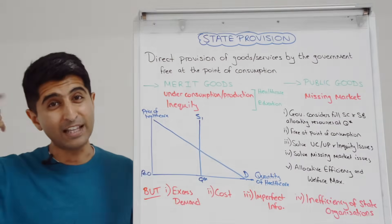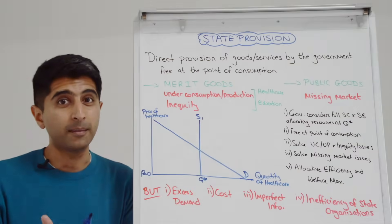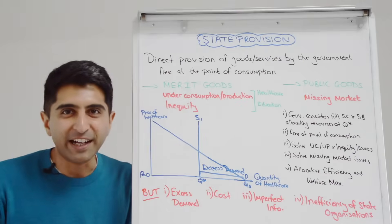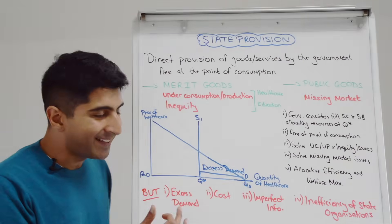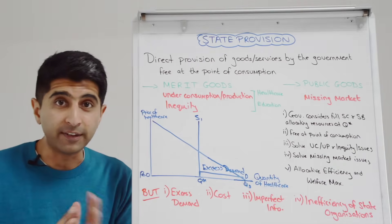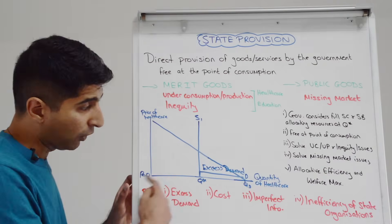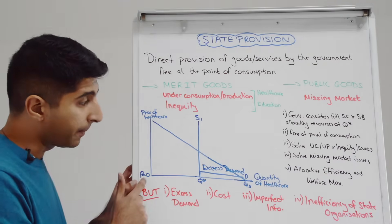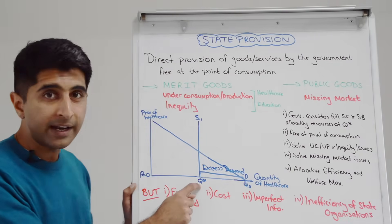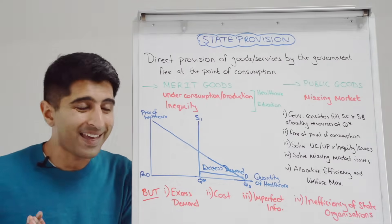That's how state provision works in theory — a lot of assumptions and theory there. Now let's look at some of the major issues, and there are lots when it comes to state provision. Certainly the biggest issue is the excess demand it creates, and this always occurs whenever the price is zero, whenever something is provided free at the point of consumption. On our diagram, it's very clear that when the price is zero, quantity demanded is way over there, while quantity supplied is only at Q star — the difference between those two quantities is the excess demand.